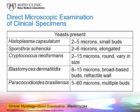Histoplasma capsulatum and Sporothrix schenckii are both among the smaller fungi, with a size range of around 2 to 6 microns. They both have small budding cells, and Sporothrix schenckii will have elongated cells. Cryptococcus neoformans is sort of intermediate, with a size range of 2 to 15 microns, and the cells are round and vary in size. Blastomyces is 8 to 15 microns in size and has broad-based buds with a refractive wall. Paracoccidioides brasiliensis is one of the larger ones, with cells anywhere from 2 to 60 microns, and it produces multiple budding cells.